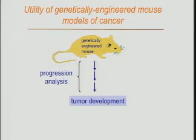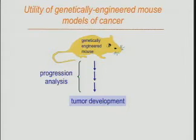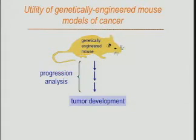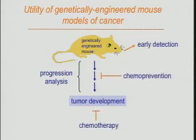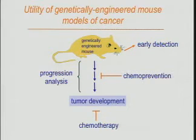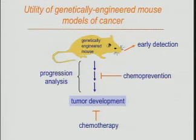Doug Hanahan has done the most extensive work using this type of model to understand the fine details from initiation through progression to metastasis. We can learn a lot of cancer biology by dissecting what these different steps mean. In addition, these mice are becoming increasingly useful for practical applications. Once you have a faithful model of human cancer, you can use it to study new therapeutics, early detection strategies, or ultimately chemoprevention. We're finding a greater degree of adoption of these models not just in academia but also in industry.